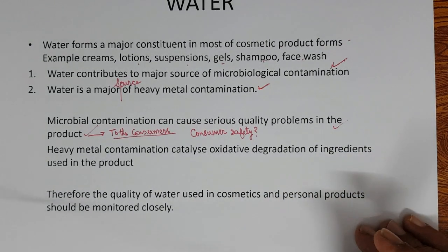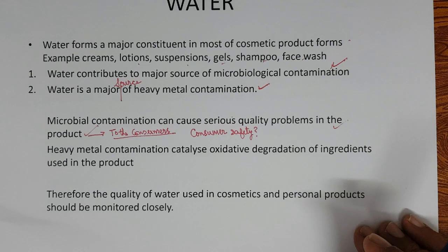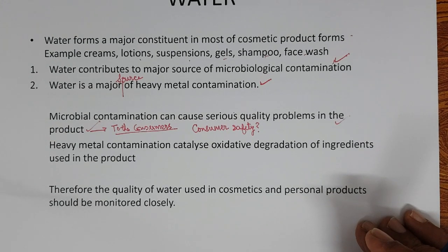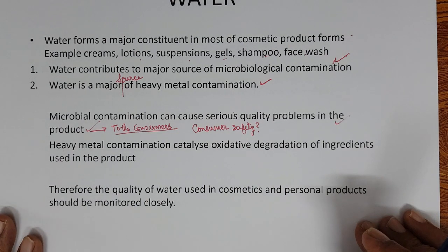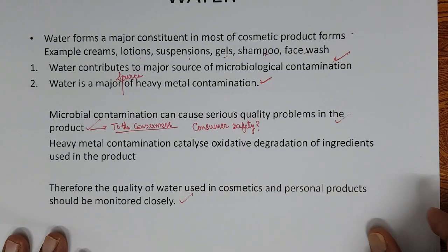Heavy metal contamination — what happens? It catalyzes oxidative degradation of ingredients used in products. For example, some perfumes degrade in the presence of heavy metals. If you have used vegetable oils, the polyunsaturated fatty acids can become rancid in the presence of heavy metals, as it catalyzes oxidation. Some products develop color changes — brown color changes — because of these oxidation processes. So heavy metal contamination, the major source of which is water, must be monitored. Therefore, the quality of water used in cosmetics and personal care products should be monitored very closely.